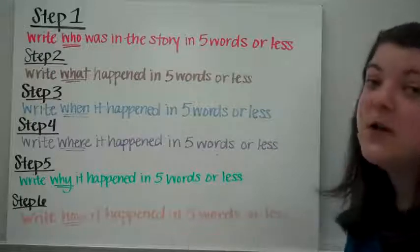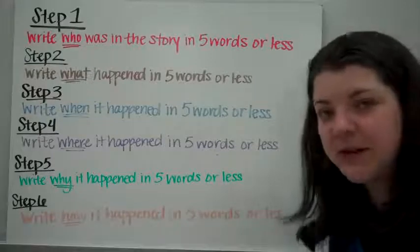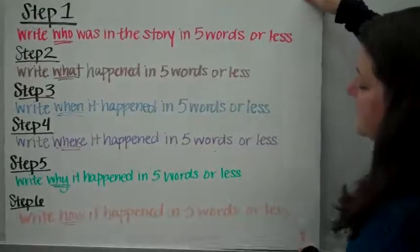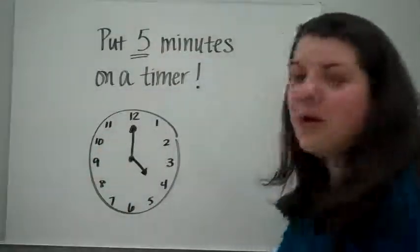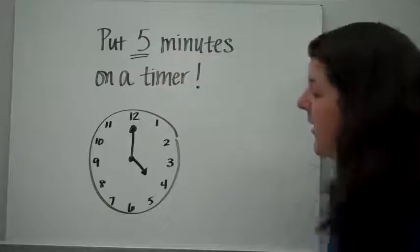And step six, write how it happened in five words or less. Again, that one's probably going to take you your five words. So after all of that, put five minutes on a timer. That's all the time you have.